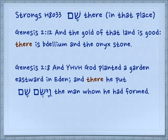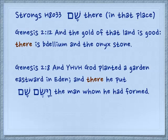Genesis 2:12: And the gold of that land is good. There is bedelium and the onyx stone. In Genesis 2:8 we see both words side by side: And Yehovah God planted a garden eastward in Eden, and there — sham — he put — by yasem, with the sin — the man whom he had formed.